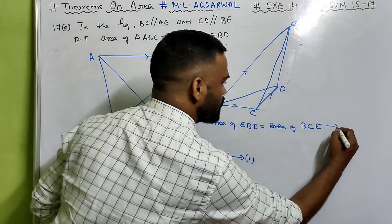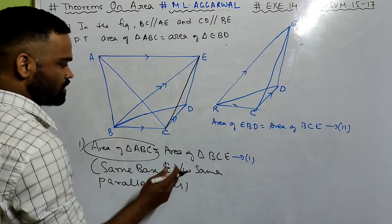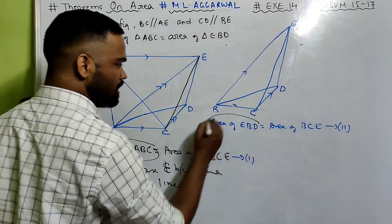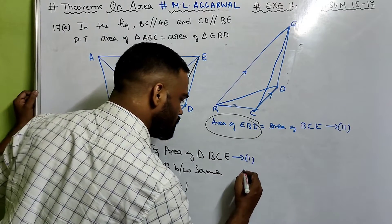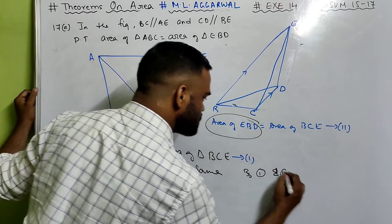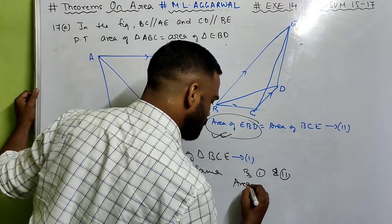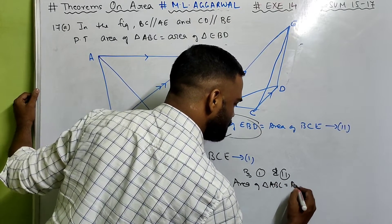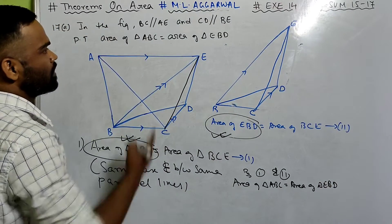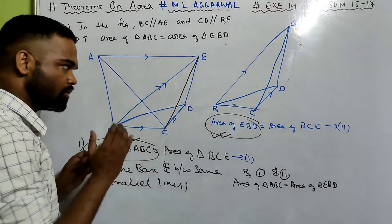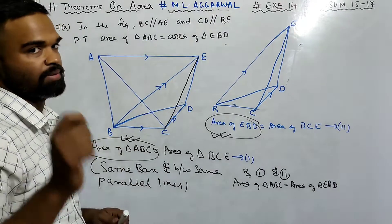This was relation 1 and this is relation 2. Area of ABC equals area of BCE, and area of EBD equals area of BCE. By relations 1 and 2, area of triangle ABC equals area of triangle EBD. That is what we were supposed to prove. You need to visualize this sum properly — practice makes the man perfect.